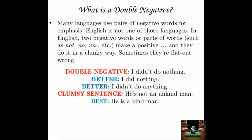What is a double negative? This is a particular kind of grammatical error that many people use anyway, and it makes your sentences clunk. Many languages use pairs of negative words for emphasis. English is not one of those languages. In English, two negative words or parts of words — such as 'not,' 'no,' 'un,' and so on — make a positive negative, and they do it in a clunky way. Sometimes they're flat out wrong.